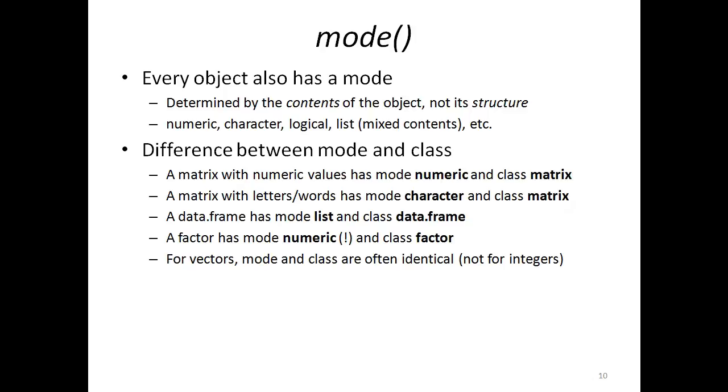In addition to the classes, each object also has a mode. For a lot of objects, the mode turns out to be the same as the class, but not always. The mode is usually determined by the contents of the object, not its structure. So different modes could be numeric, character, logical, list. List in this case stands for mixed content, different modes mixed in the same object.